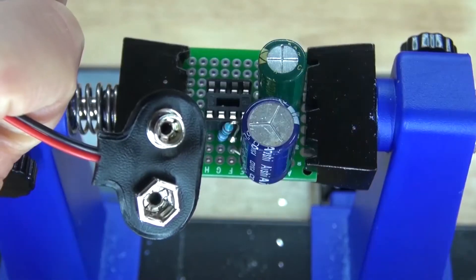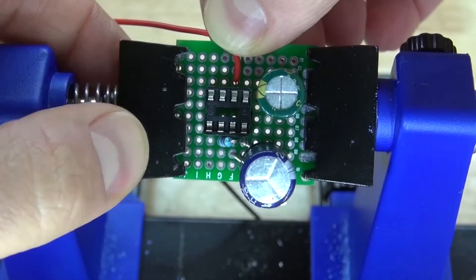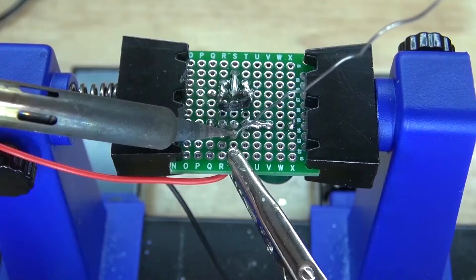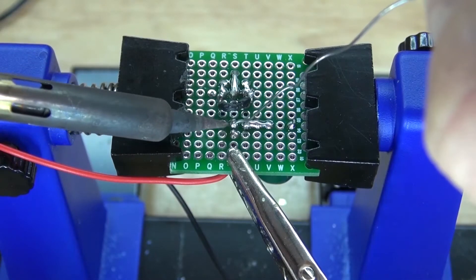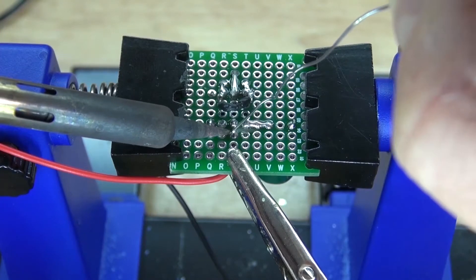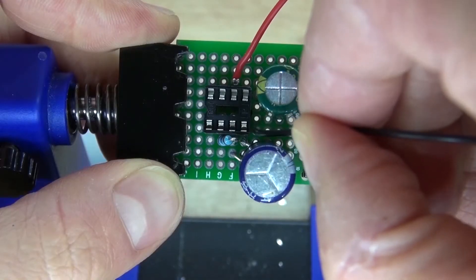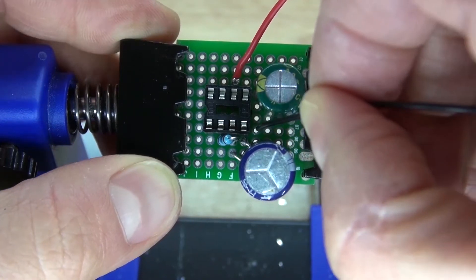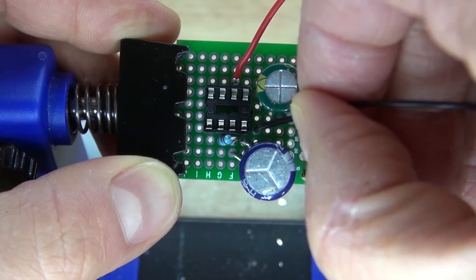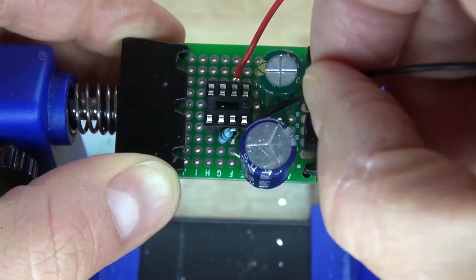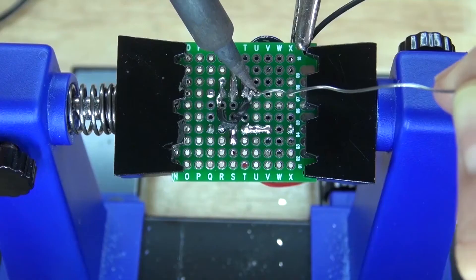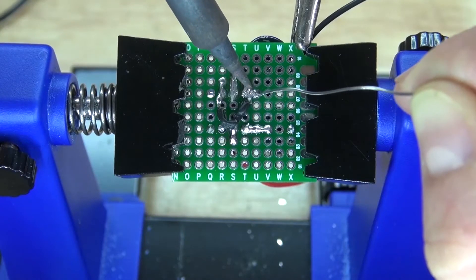Take your 9 volt battery connector. Connect the positive to pin 6. Solder bridge it to 6. Take the negative of the battery clip and connect it to pin 4. Solder it into place.